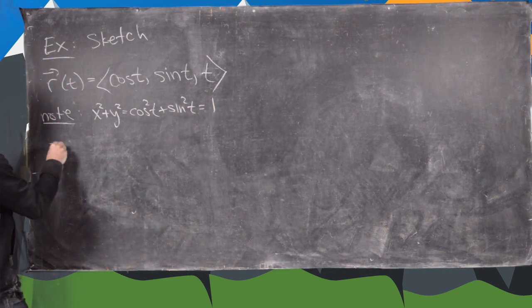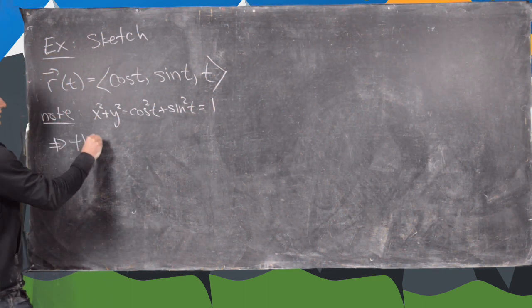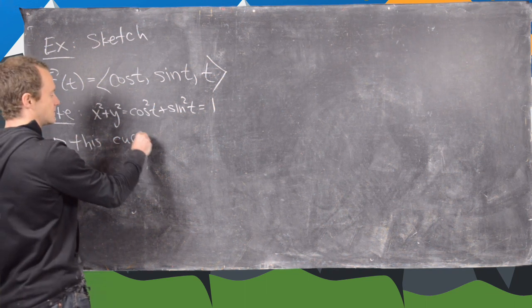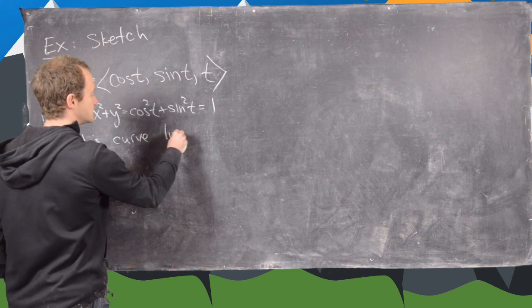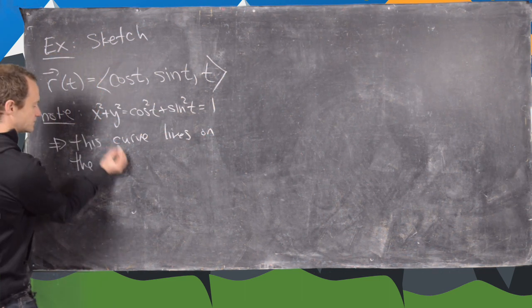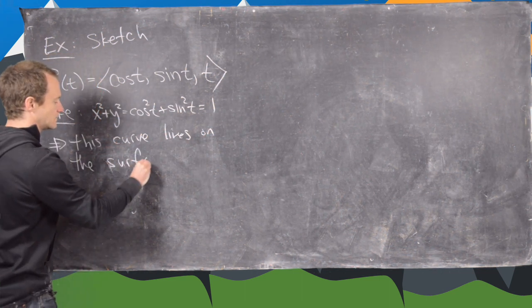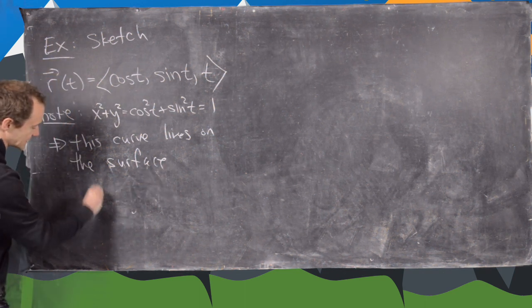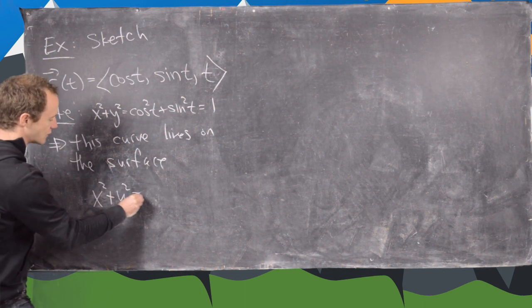Which tells us that this curve lives on the surface given by x squared plus y squared equals 1.